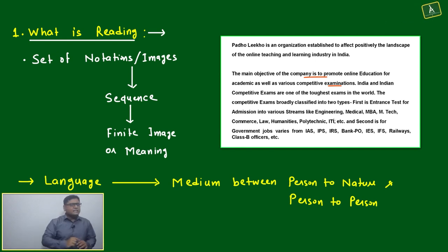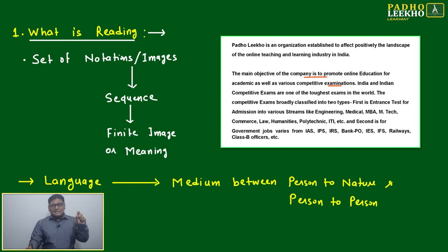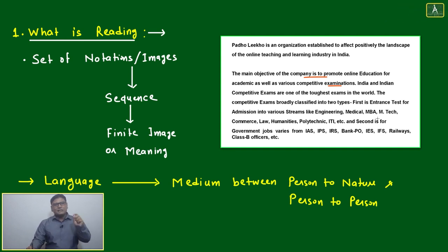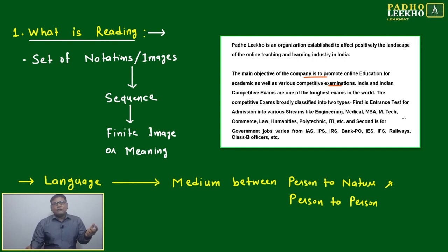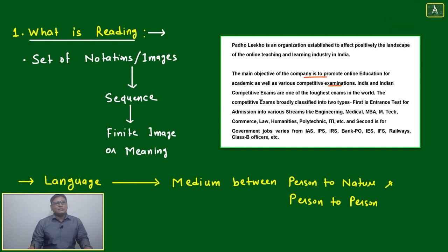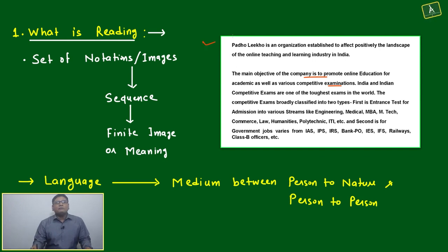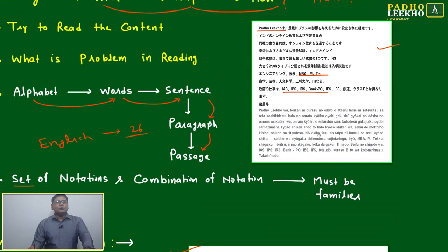You are able to understand it — Parolico is an organization doing something related to online education. We should take the benefit; they are doing wonderful work. What are the things you can extract from all this? Now we'll come to the point: why are we able to understand this one and not the other?